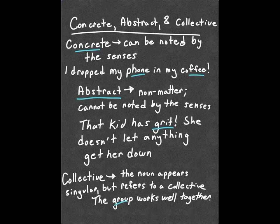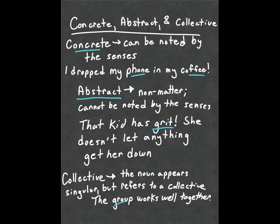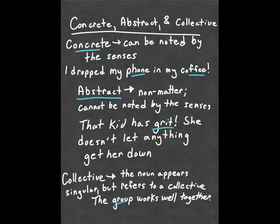We have further labels for nouns, such as concrete nouns — something we can pick up with one of our five senses: taste, smell, sight, and so on. "I dropped my phone in my coffee" — the phone is something physical that can be touched; coffee can be smelled, seen, and so forth. Abstract is when we're getting into non-matter. You can't look at something and say "that is comfort" — it may look comfortable, but that's different. Abstract is something that is an idea or a concept. "That kid has grit" — meaning determination and toughness — grit is an abstract noun.